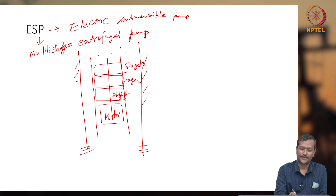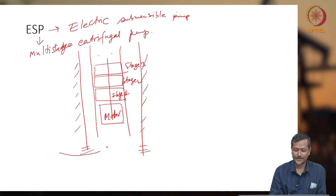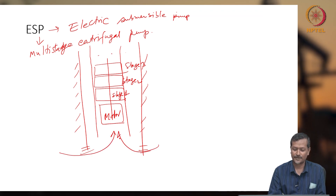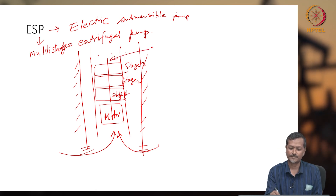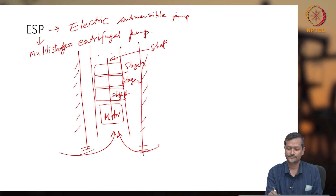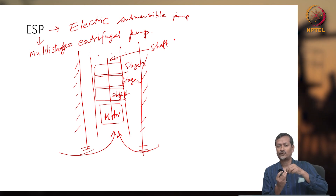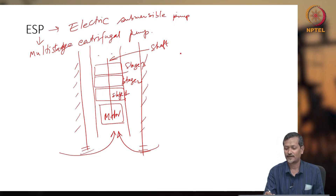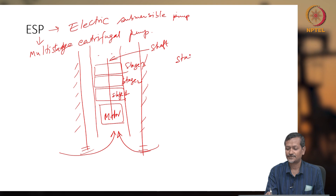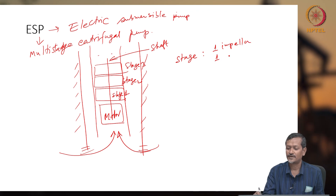Perforations are here and cementing is here. Fluid enters through the perforations and passes through the motor and pump. One shaft runs through the system — the shaft takes torque from the motor and delivers it to the stages. Each stage has one impeller and one diffuser.